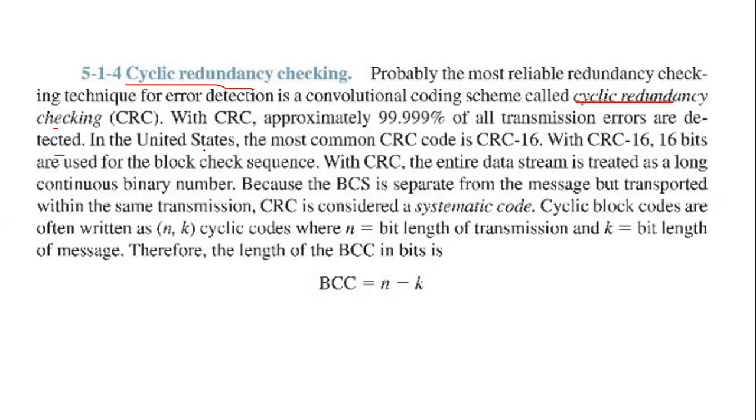In the United States, the most common CRC is CRC-16. 16 bits are used for the block check sequence. The entire data stream is treated as a long continuous binary number.